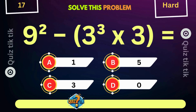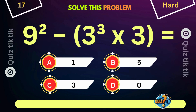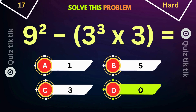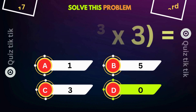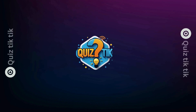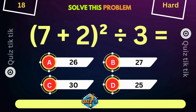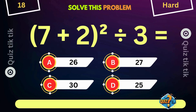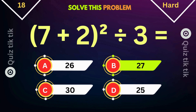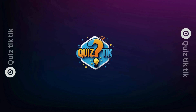What is 9 squared minus the quantity 3 cubed times 3? What is 9 squared divided by 3?